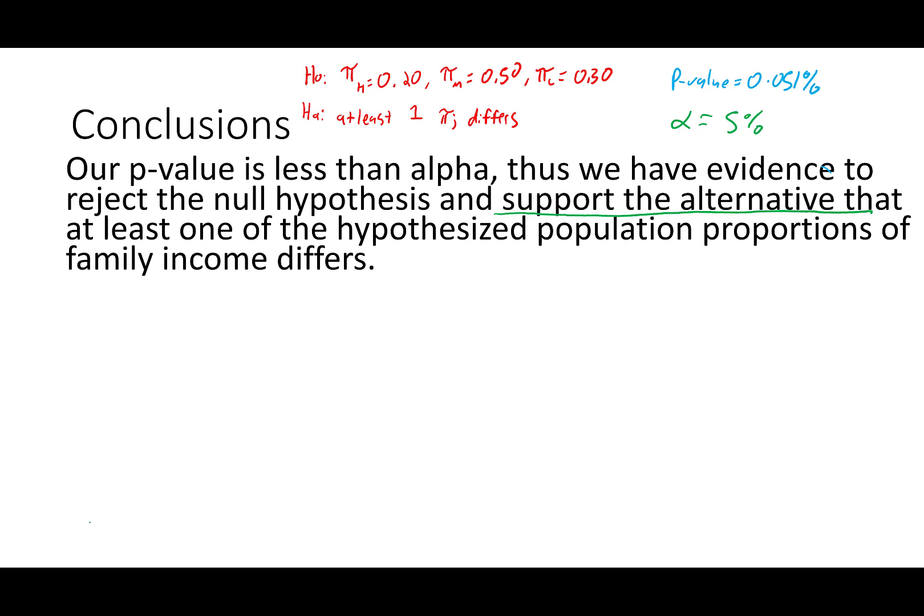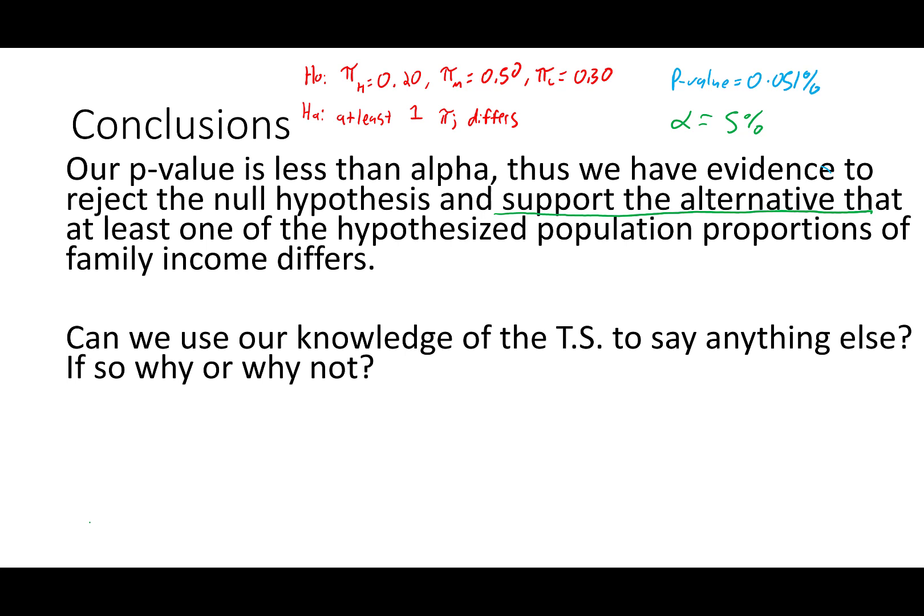We don't know if it's the first one, the last one, or the middle one. We don't know if two of them differ or if all three differ. However, all we're saying is we have evidence that at least one differs from what we expect. Now, this is typically what we would do with a hypothesis test — we have evidence that one differs, and then we'd say we're done. However, can we use our knowledge of the test statistic to say anything else?